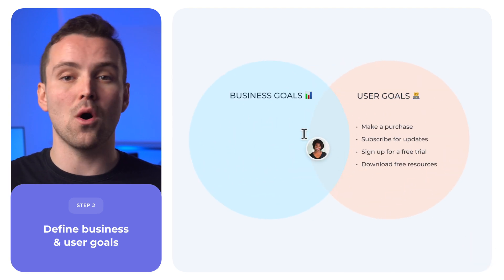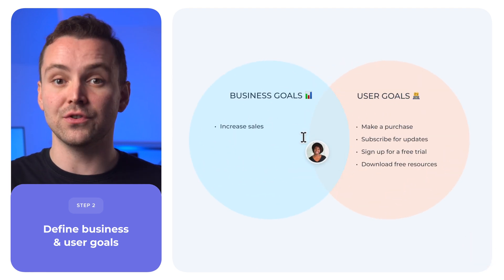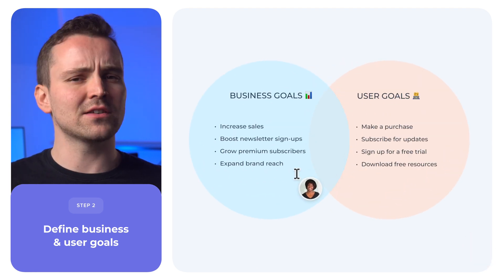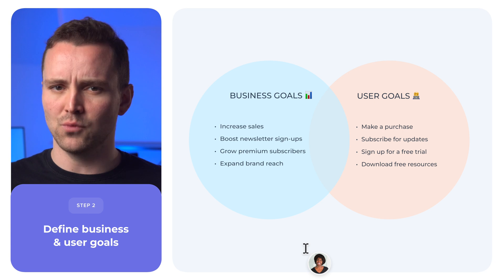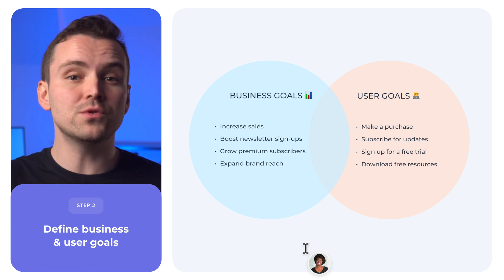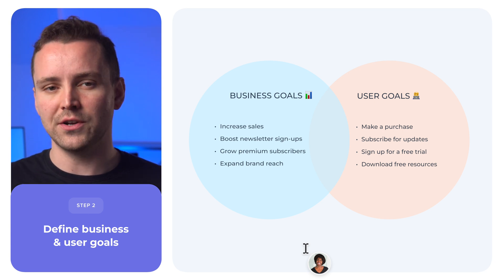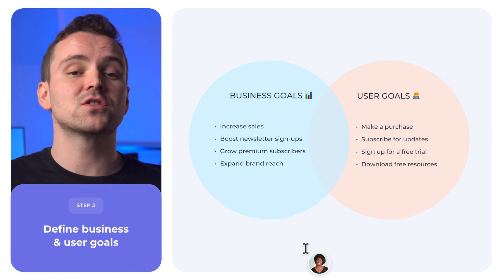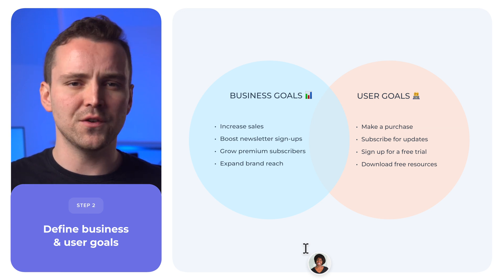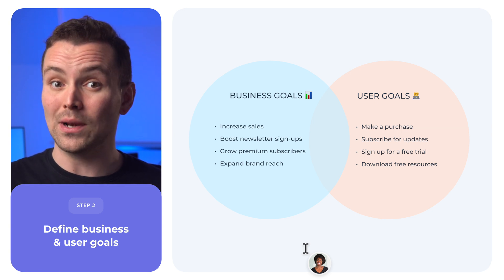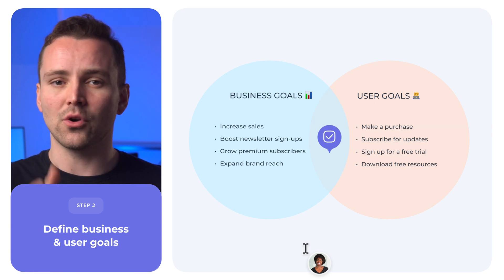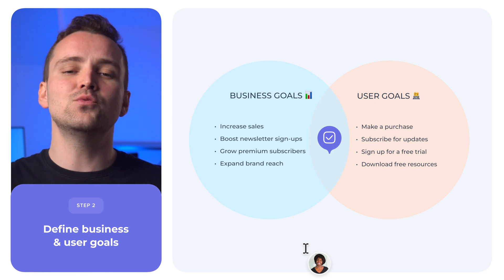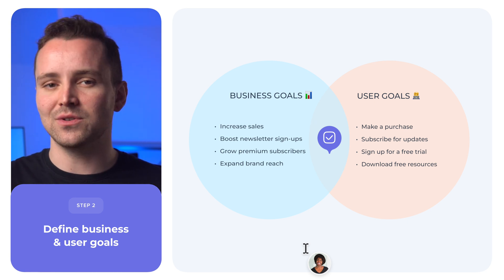Step 2: Define your goal and the user's goal. Are you looking for sales? Newsletter signups? More subscribers? What are your users trying to accomplish? Some will be looking to buy, some are signing up for trials, others may want your lead magnet. The alignment of your goals and theirs is what leads to seamless user flow.